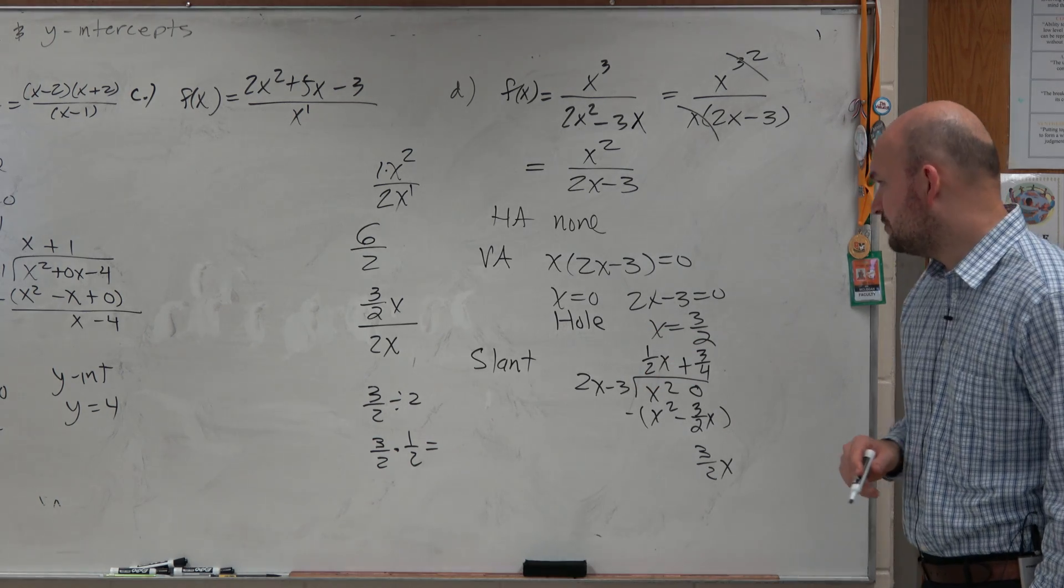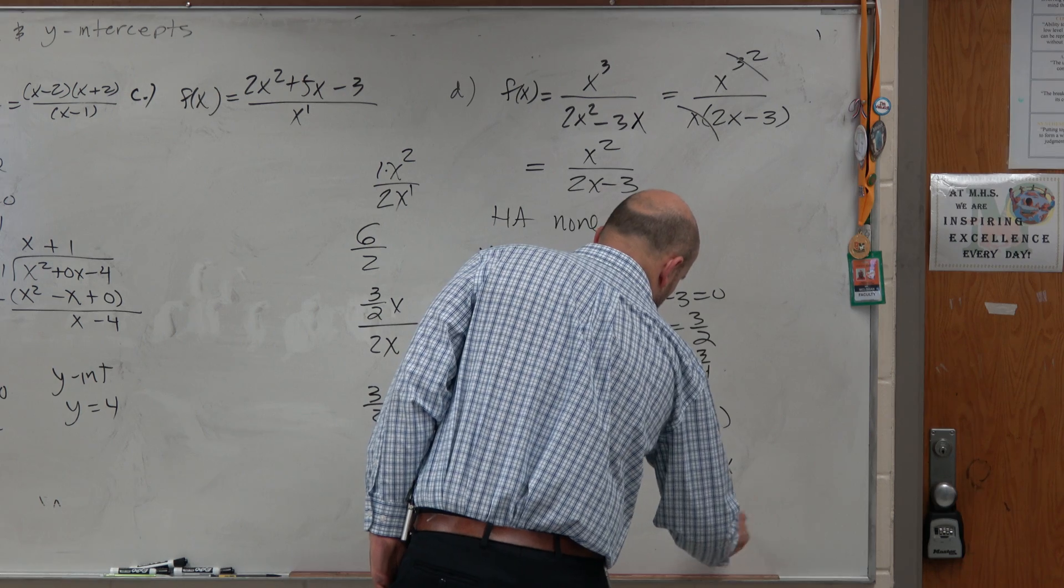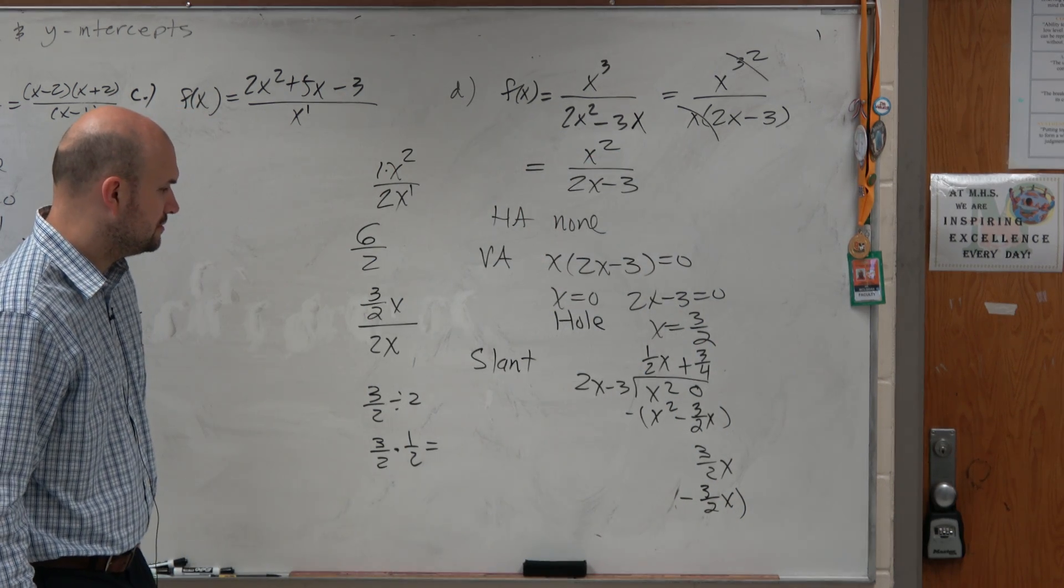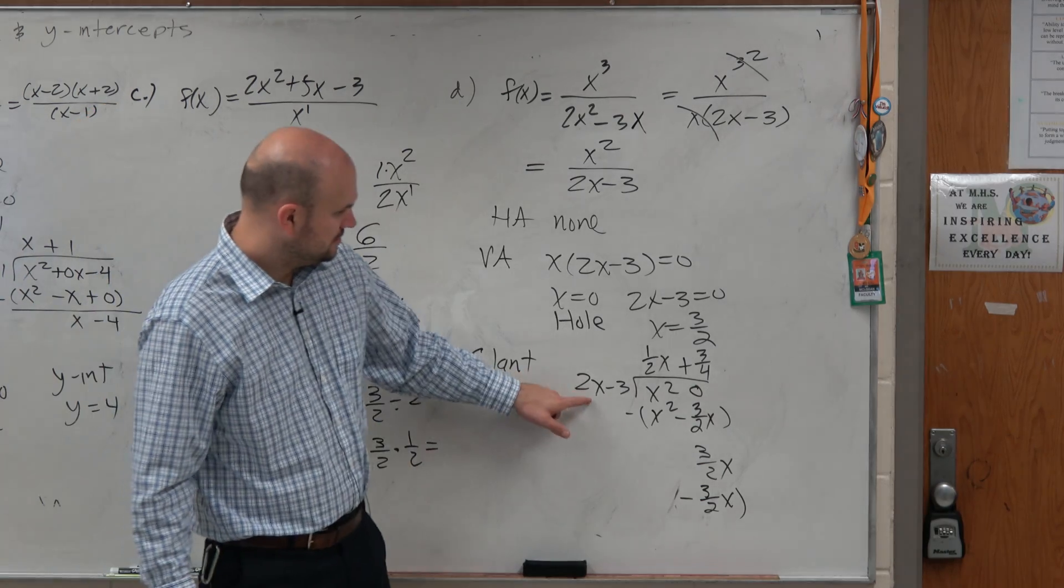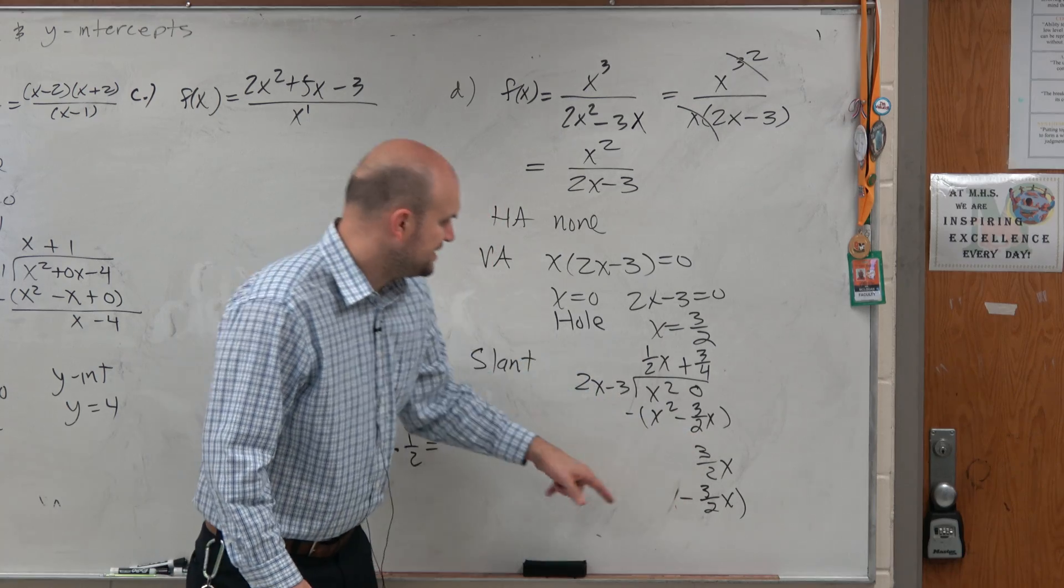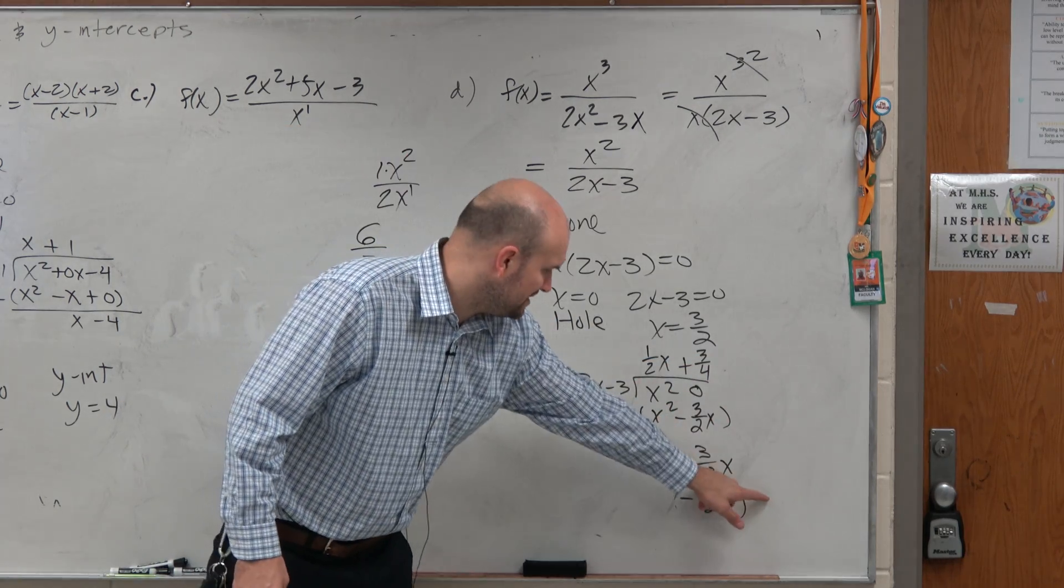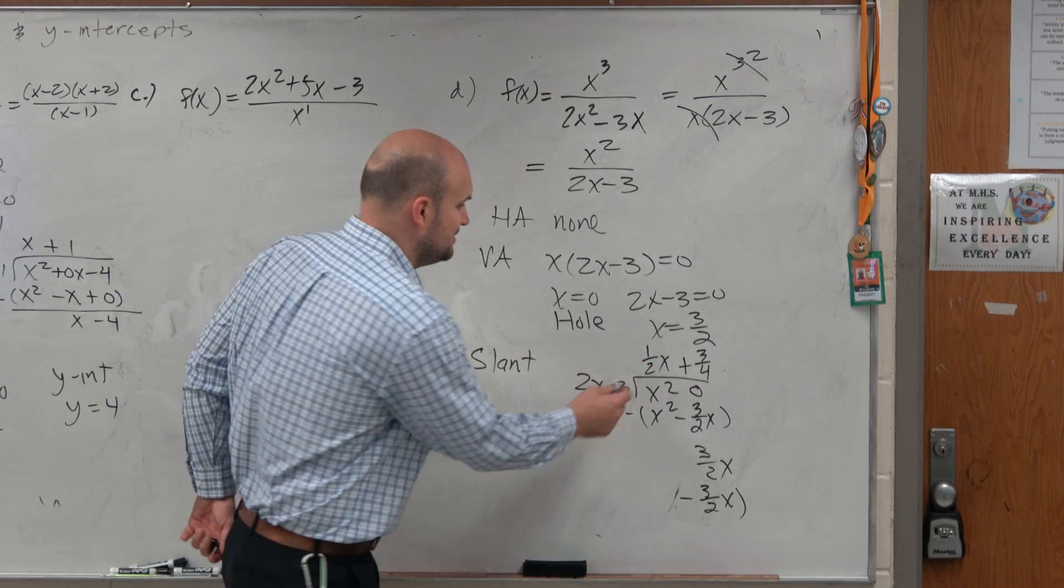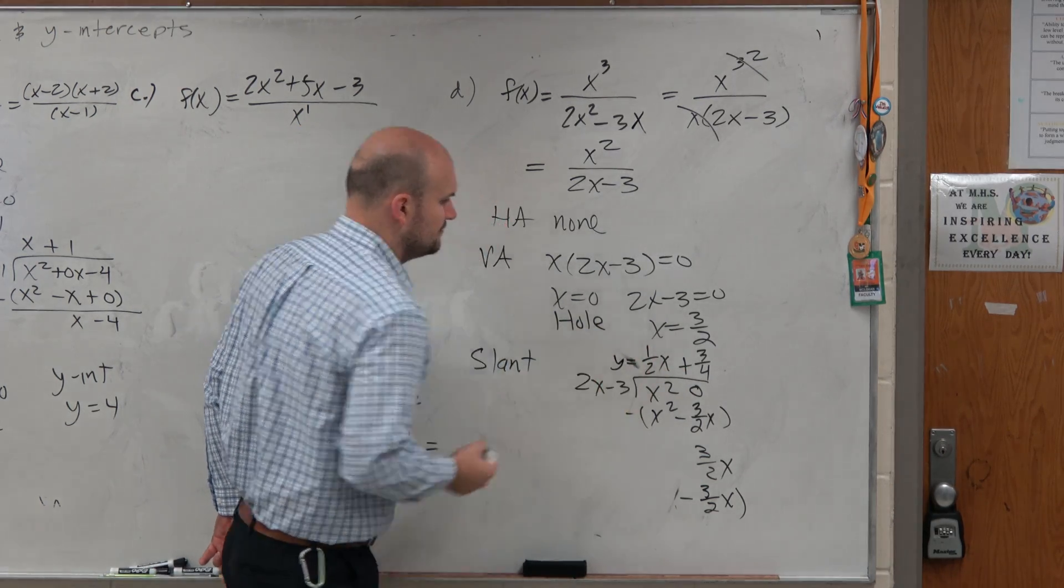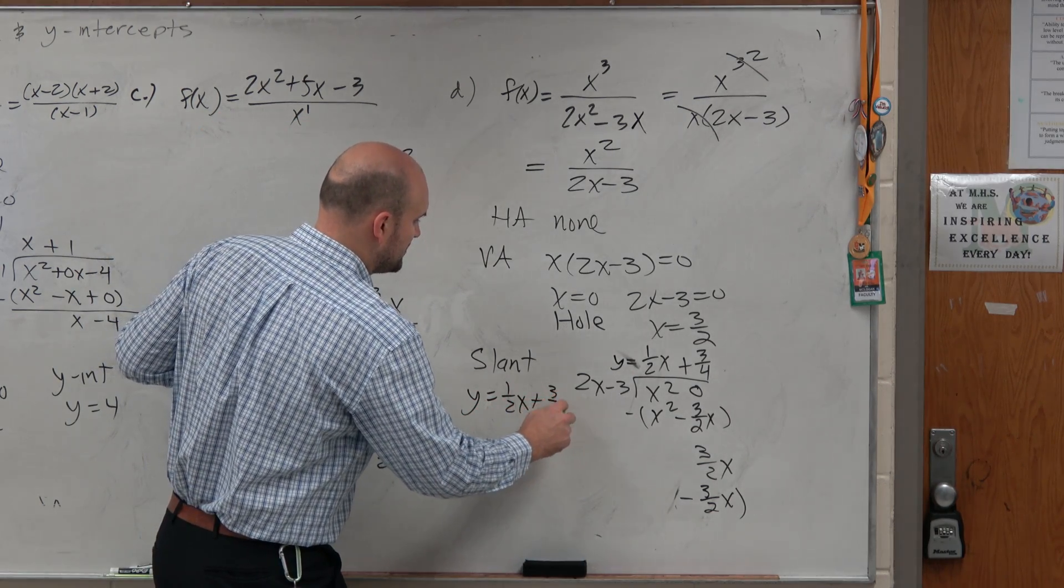And then we do 3 fourths times 2, which is going to be a 3 halves x. It should be negative 3 fourths times negative 3, but that's going to be a constant. I have my equation on my line, so therefore I am done. So my slant asymptote is y equals 1 half x plus 3 fourths.